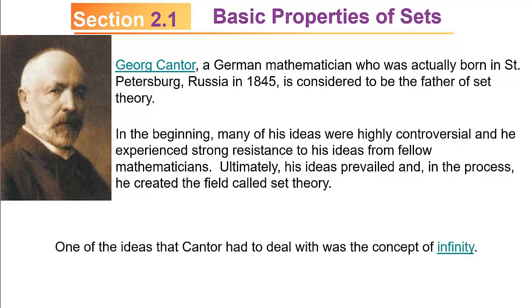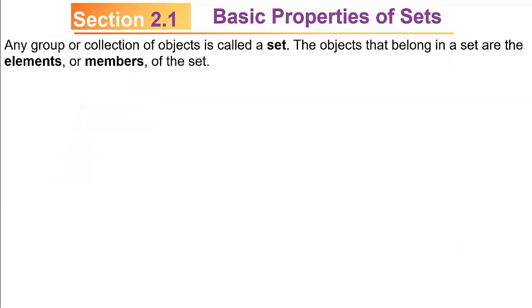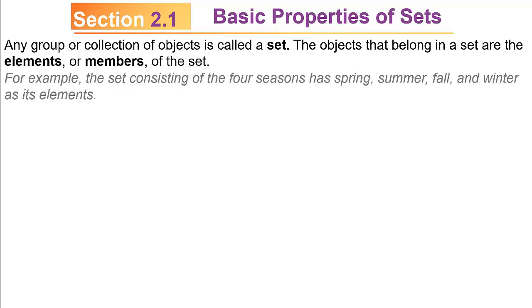One of the ideas that Cantor had to deal with was the concept of infinity. Going back to the idea of a set, any group or collection of objects is called a set. The objects that belong to the set are its elements or members. For example, the set consisting of the four seasons has spring, summer, fall, and winter as its elements.